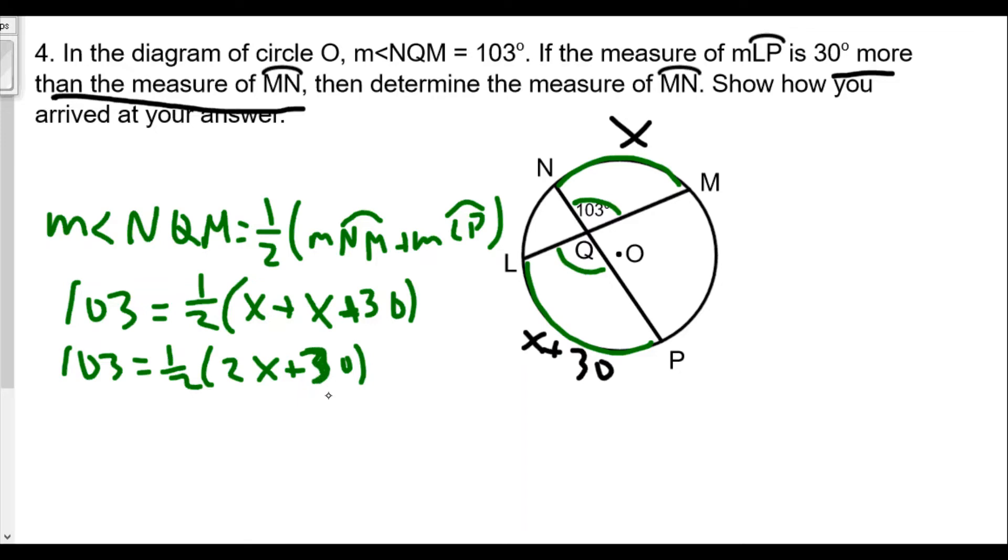You can multiply both sides by two to get rid of the one half, but I like my numbers smaller, so I know the one half will divide evenly into 2x and 30. We get 103 equals x plus 15.